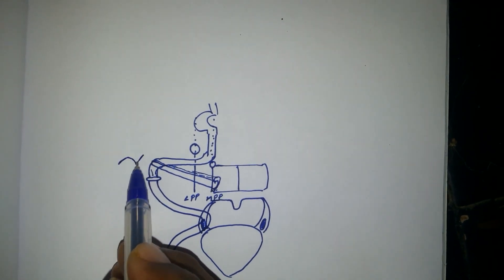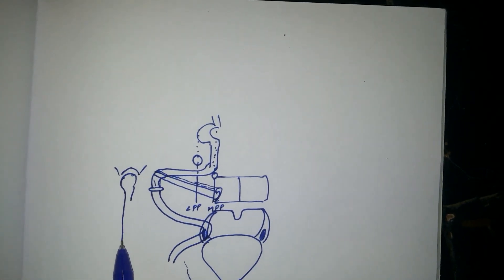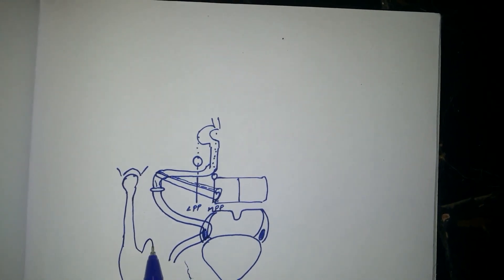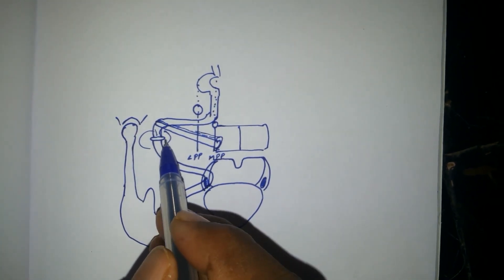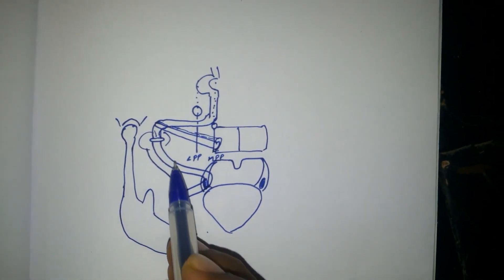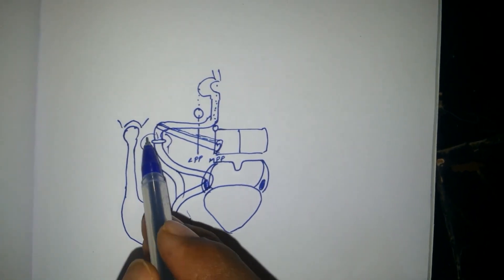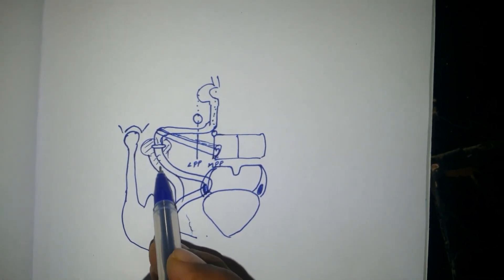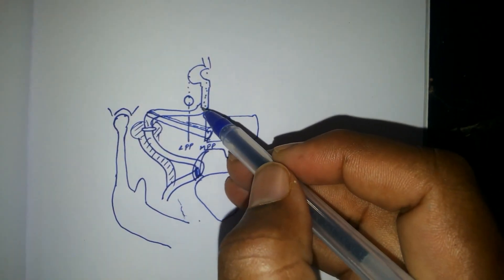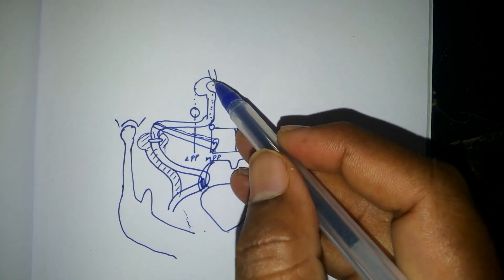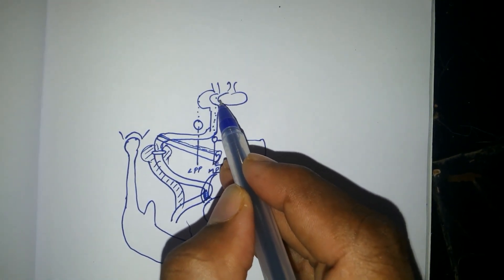Temporomandibular joint. Mandibular condyle. Next, this is the jugular bulb. The intratemporal jugular vein accompanies the parapharyngeal carotid. This is the internal jugular vein. Next, this is the parapharyngeal and paraclival carotid, paracavernous carotid.